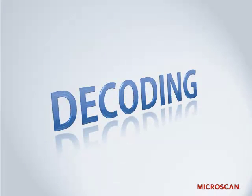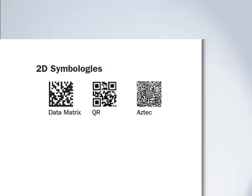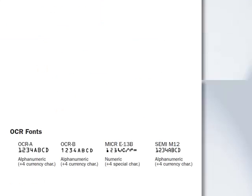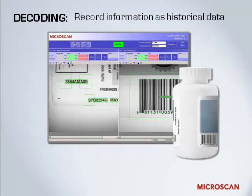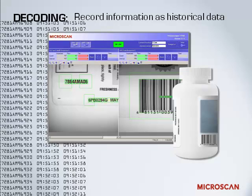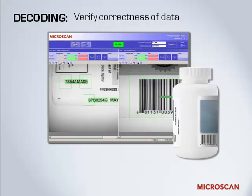Decoding refers to the decoding of 1D and 2D symbologies, such as linear barcodes, stacked symbologies, and 2D symbologies such as data matrix codes. This also refers to OCR, or Optical Character Recognition, which is text that is simultaneously human and machine readable. Decoding is typically used to record information as historical data, giving you a record of parts that have gone through a process. You can track the path a part took through that process and use that data for immediate action — sorting based on what it says — and also validate the data for correctness when you read a marked code on an object, verifying that the data in the mark is correct, the format is correct, or that you have the correct product going down a production line.